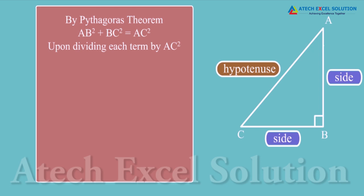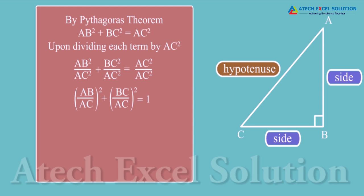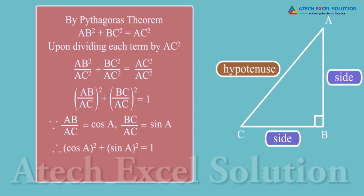(AB/AC)² + (BC/AC)² = 1. Since AB/AC = cos A and BC/AC = sin A, upon substituting we get cos²A + sin²A = 1, or equivalently sin²A + cos²A = 1. This is a trigonometric identity because it is true for all angles between 0° and 90°, inclusive.